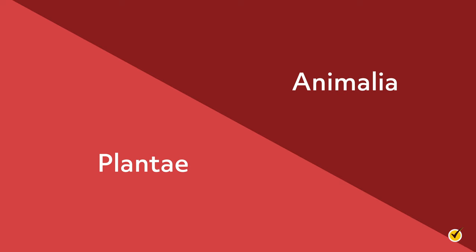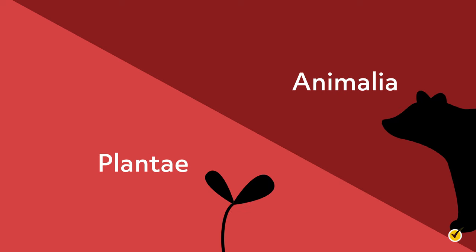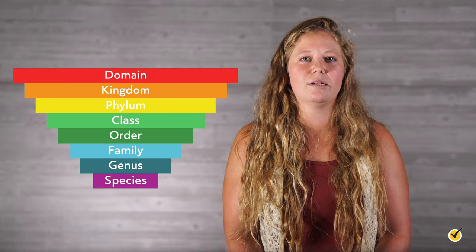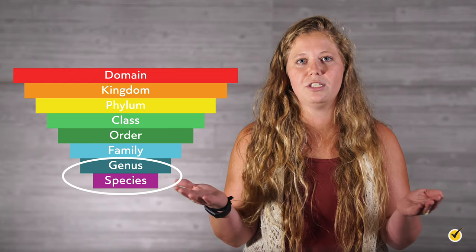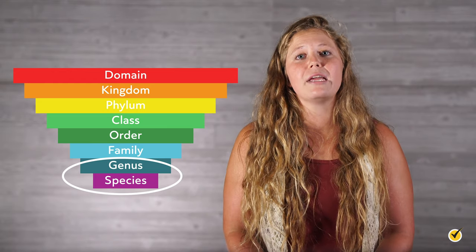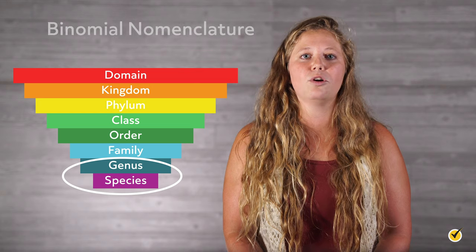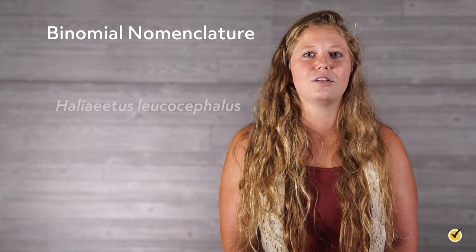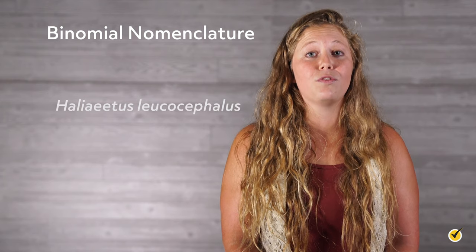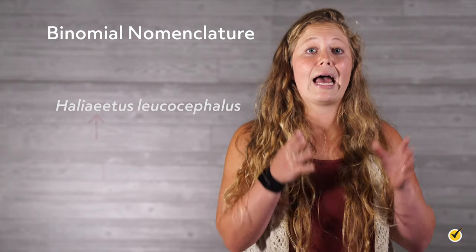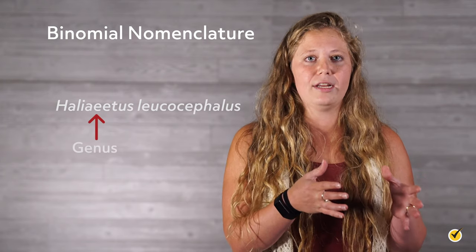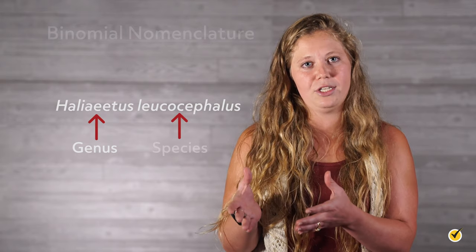Plantae and animalia are probably more familiar to us, as they include plants and animals respectively. When it comes to talking about an organism, we use the last two taxa — the genus and the species — to do so. The two-name method of naming is called binomial nomenclature. For example, bald eagles are referred to as Haliaeetus leucocephalus, which is the formal scientific way to talk about them as organisms. Haliaeetus represents their genus, and leucocephalus represents the species.